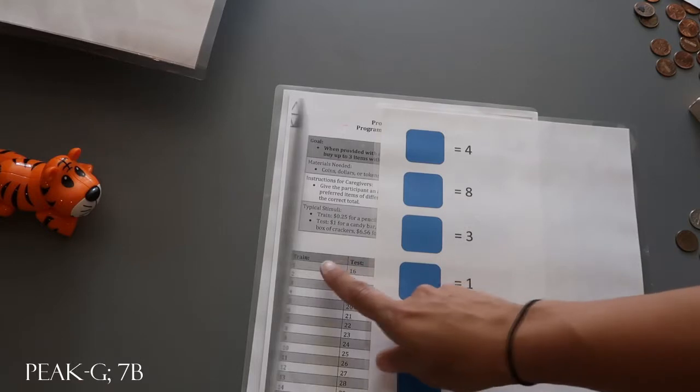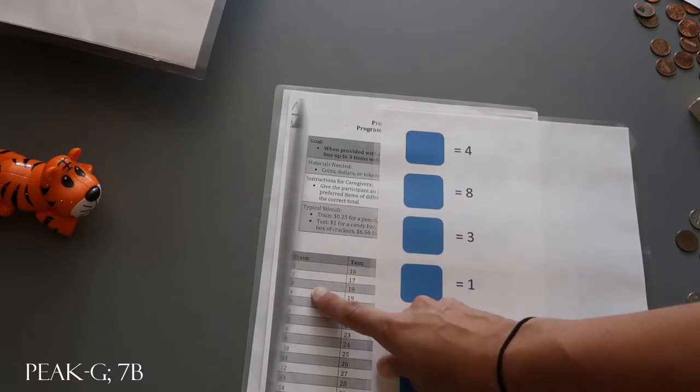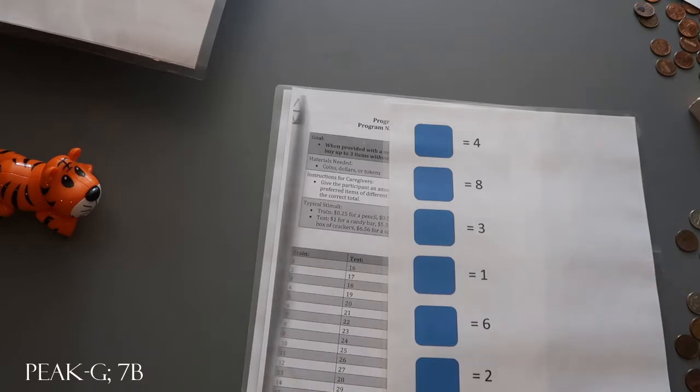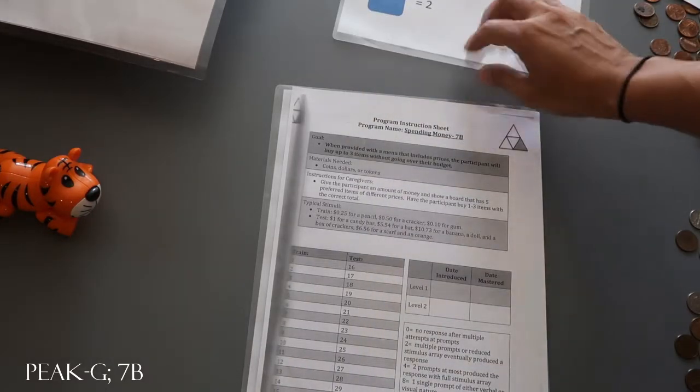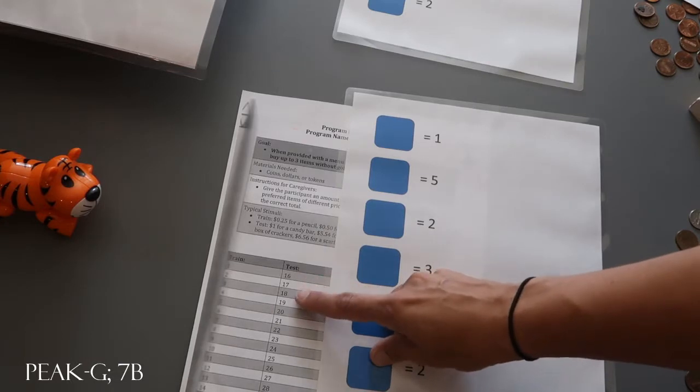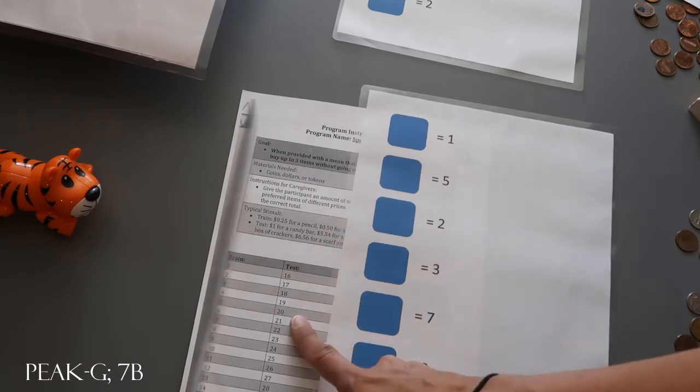you would have on there 4 cents, 8 cents, 3 cents, 1 cent, 6 cents, and 2 cents. So you would have all of those listed for the train menu. And for this test menu you would have on this side 1 cent, 5 cent, 2 cent, 3 cent, 7 cent, 2 cent.